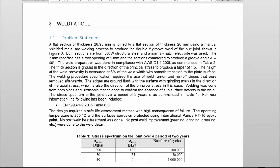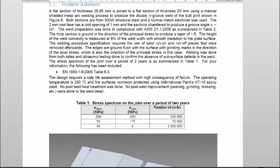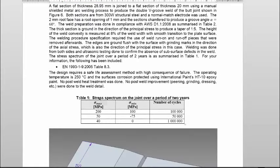Welding was done from both sides and ultrasonic testing done to confirm the absence of subsurface imperfections in the weld. The stress spectrum of the joint over a period of 2 years is summarized in Table 1. And here we have Table 1 and we can see that we have a maximum and a minimum stress for a certain number of cycles.